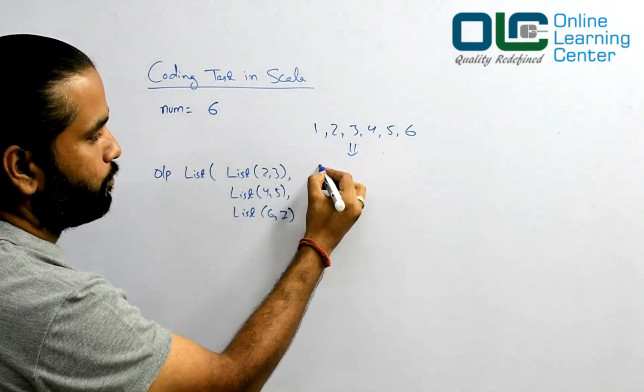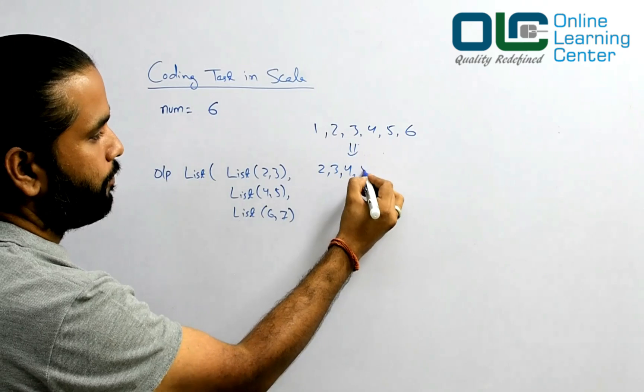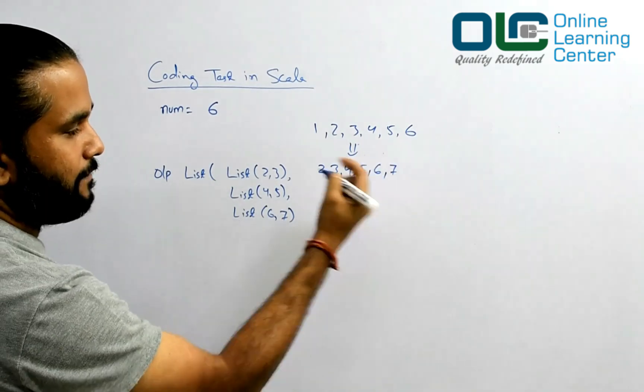So you have to now convert this into two, three, four, five, six, seven.